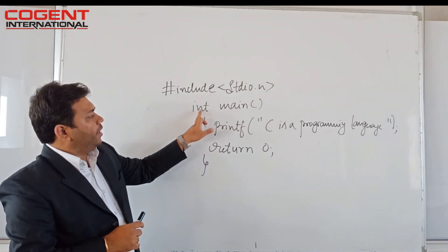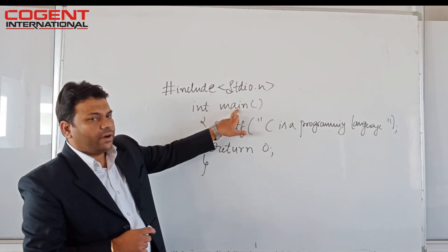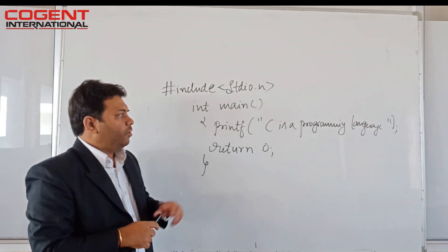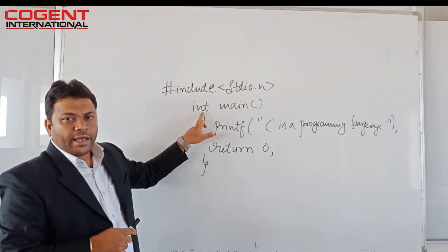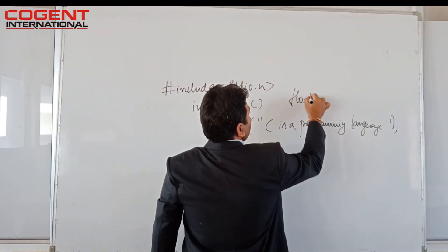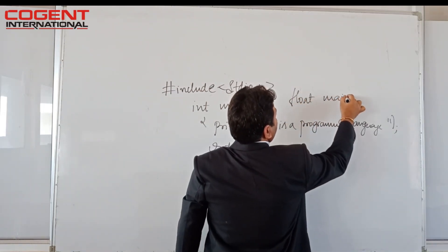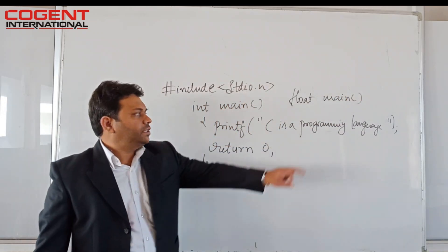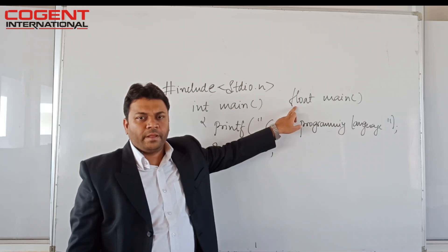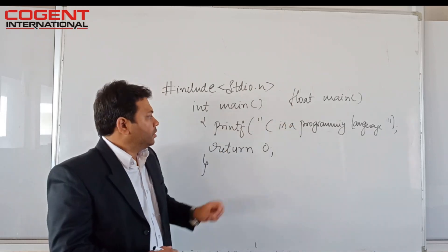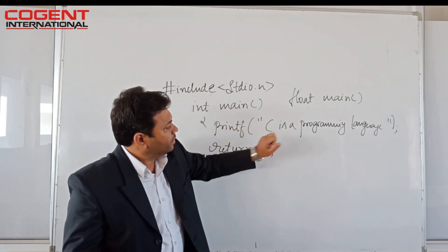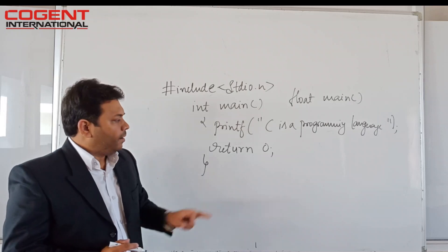If I declare int main, then the main function must return an integer value — because it is declared as int. If I declare float main, then the main function must return a floating point value. Now you will understand the return statement: the program prints 'C is a programming language'.